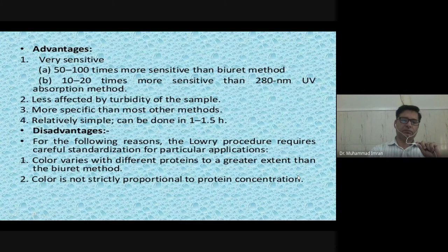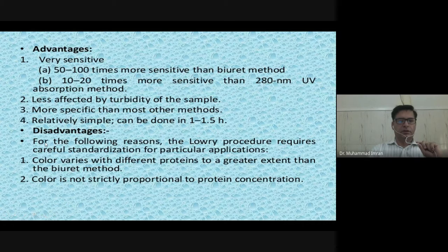Advantages of the Lowry assay: it is very sensitive — 50 to 100 times more sensitive than the Biuret assay, and more sensitive than UV 280 nm absorption. It can be done in about 1.5 hours. Disadvantages: color varies with different proteins to a greater extent.